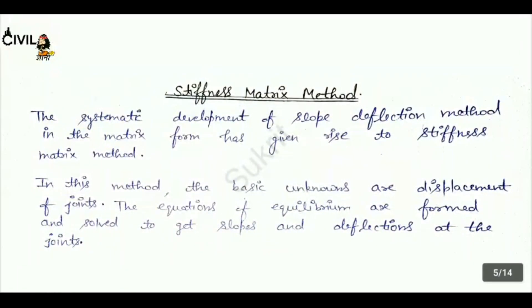Now, stiffness matrix method. The systematic development of the slope deflection method in matrix form has given rise to the stiffness matrix method. In this method, the basic unknowns are displacements of joints. The equations of equilibrium are formed and solved to get slope and deflection at the joints.